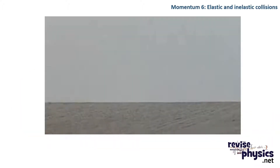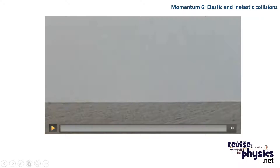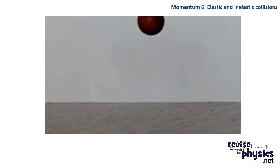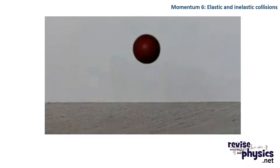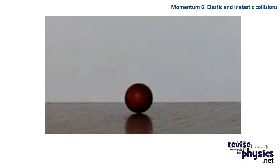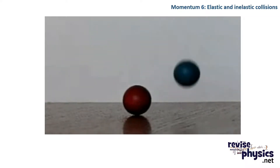If I drop two objects with the same mass from the same height, they'll have the same gravitational potential energy and therefore the same kinetic energy on impact with the floor. But depending on what materials they're made of, you'll get very different rebound heights. The red ball is far less elastic than the blue ball, so it doesn't bounce anywhere near as high, meaning it's lost more kinetic energy on impact.